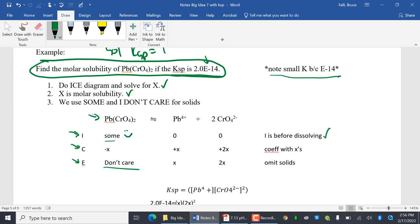Now it's going to start dissolving. How much dissolves? X. How much forms? X. How much forms? 2X. In the end, we don't care. By the way, we will always have some. And then we're going to get X and 2X.